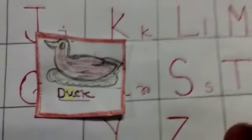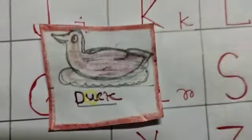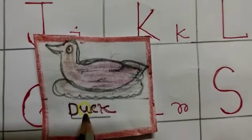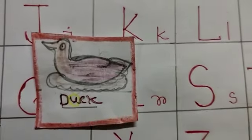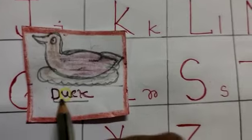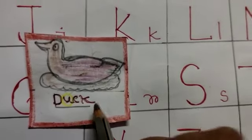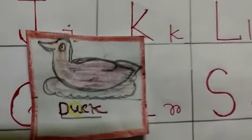This is a picture of duck. Here, U, vowel. D, C, K are consonants.